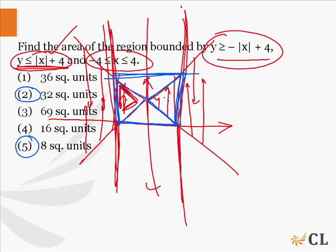32 square units, which is half of 64, and 8 square units, which is half of 16. Obviously, 8 is too small a value because the region is larger. My correct choice has to be option number 2.